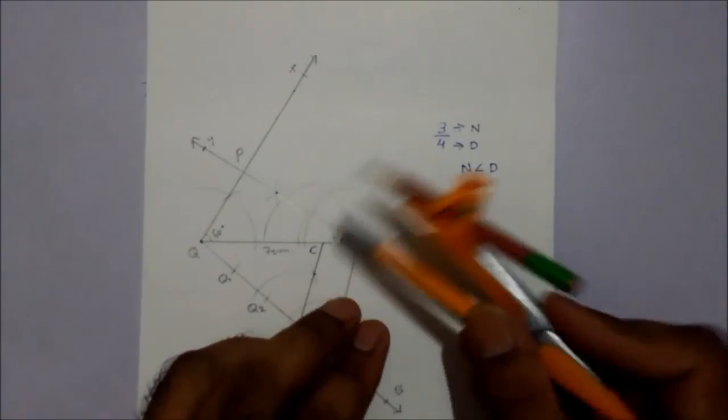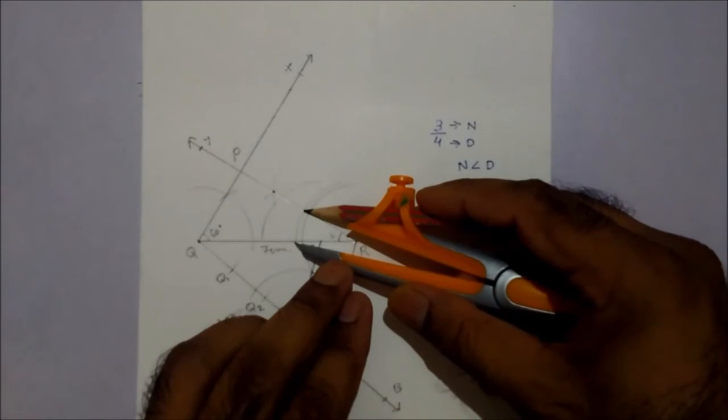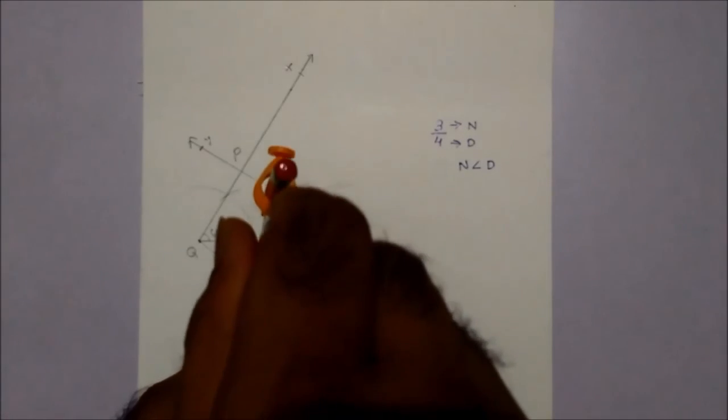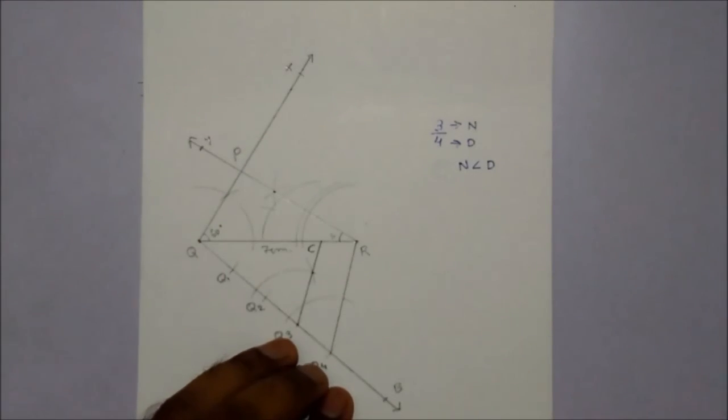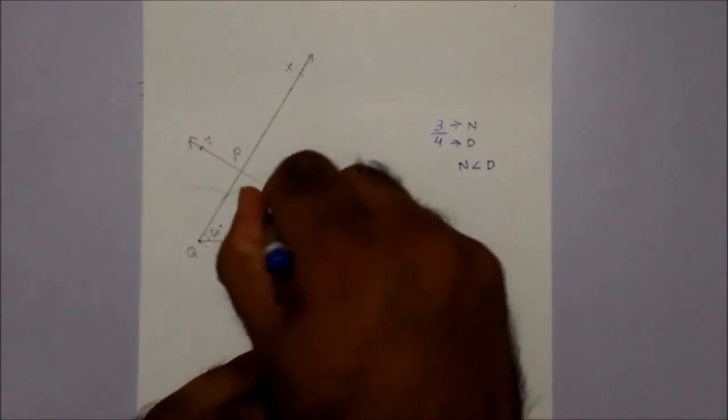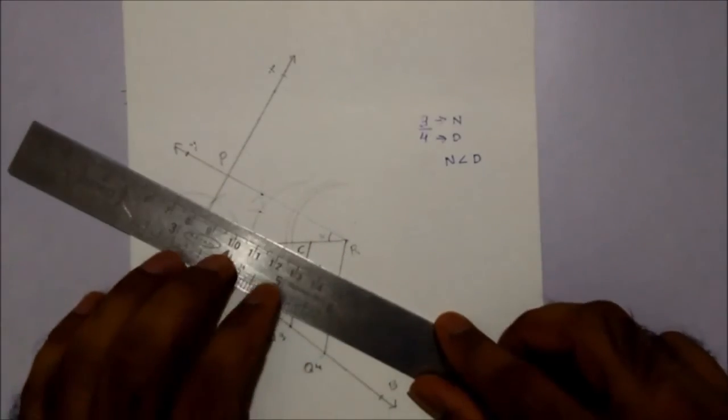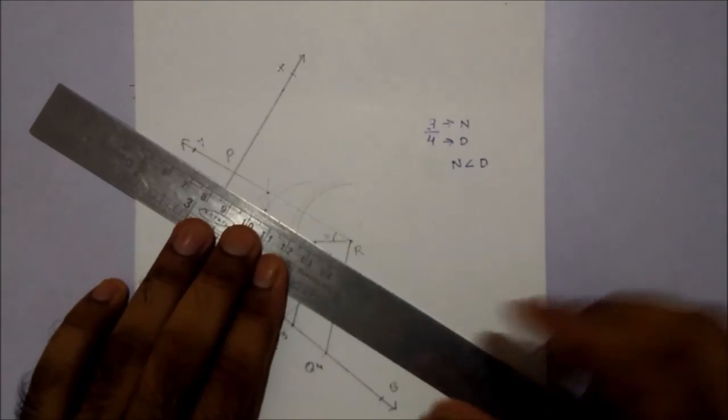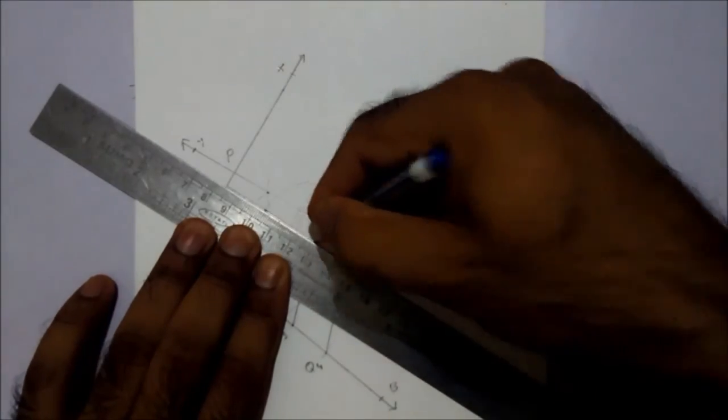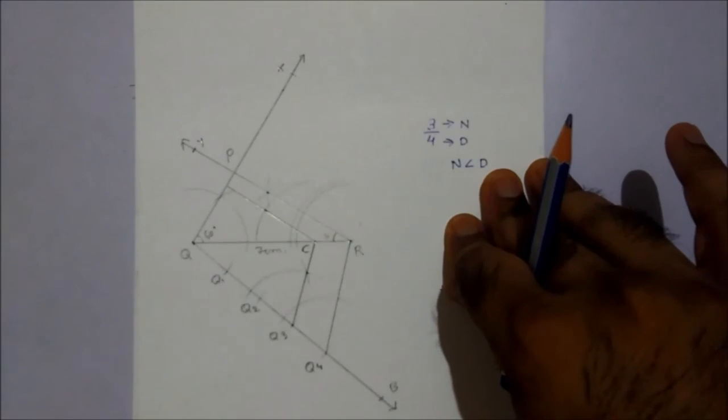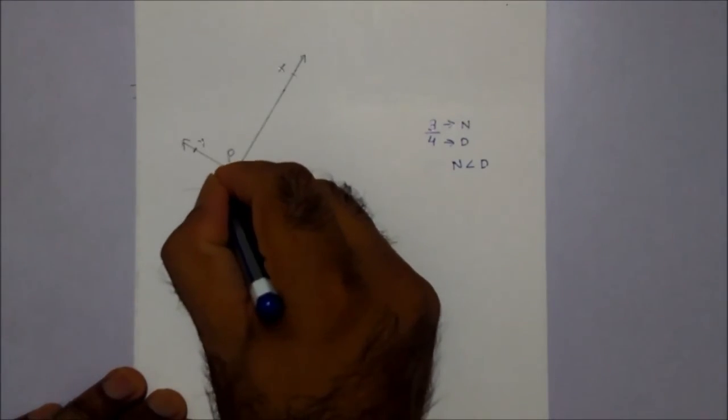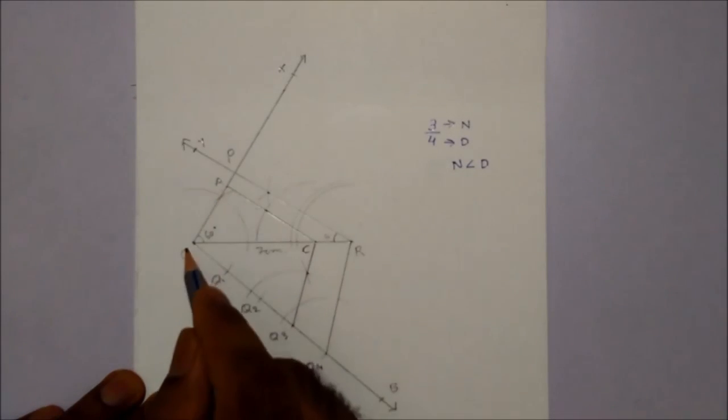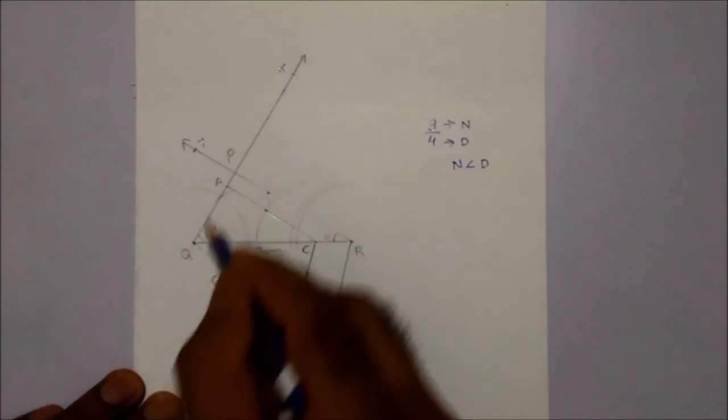Now measure the arc. This is the intercepting point meeting C. So this is our point A. This is the required triangle AQC which is similar to PQR.